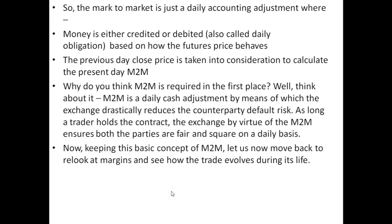Mark to Market is simply a daily accounting adjustment where money is either credited or debited — also called the daily obligation — based on how the futures price behaves. The previous day's closing price is taken into consideration to calculate the present day's M2M. M2M is required because it is a daily cash adjustment by means of which the exchange drastically reduces counterparty default risk. As long as traders hold the contract, the exchange via M2M ensures both parties are fair and square on a daily basis.